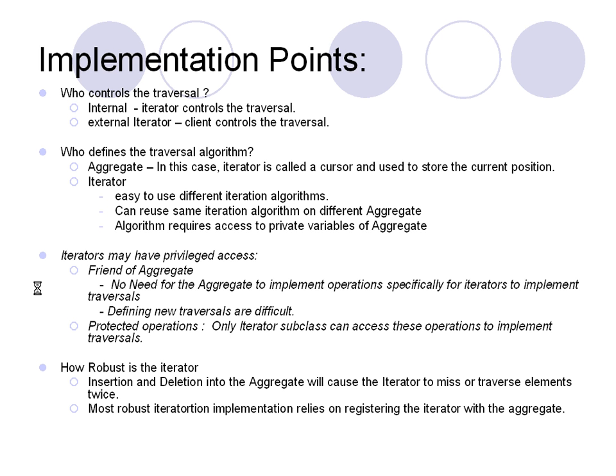It is also important to make the iterator and aggregate implementation robust. When the iterator is pointing to a particular object and an element gets added or deleted, the iterator may end up repeating an object twice or skipping some objects. This has to be handled. The aggregate can inform the iterator that elements have changed, or maintain an internal state that indicates to the iterator that objects have been added or deleted so it can reinitiate itself accordingly.